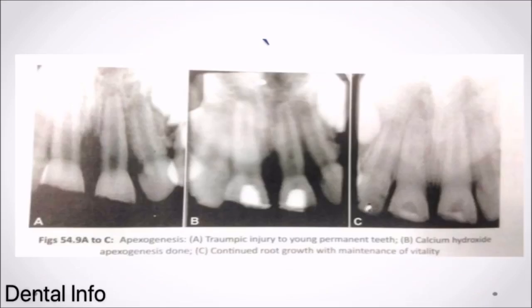Figures A, B, C illustrating Apexogenesis: A — Traumatic injury to young permanent teeth. B — Calcium hydroxide Apexogenesis done. C — Continued root growth with maintenance of vitality.